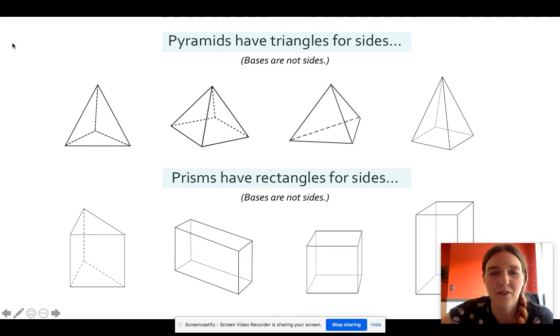Pyramids have triangles for their sides. So they sit on one shape. Again, that shape can be any shape, but their sides are always triangles because they come to a point at the top. Because prisms have a flat top, their sides are always rectangles. So again, they'll have those bases. Those bases will be any shape, but the sides that come up from the bottom base to the top base will always be rectangles, making that flat top.